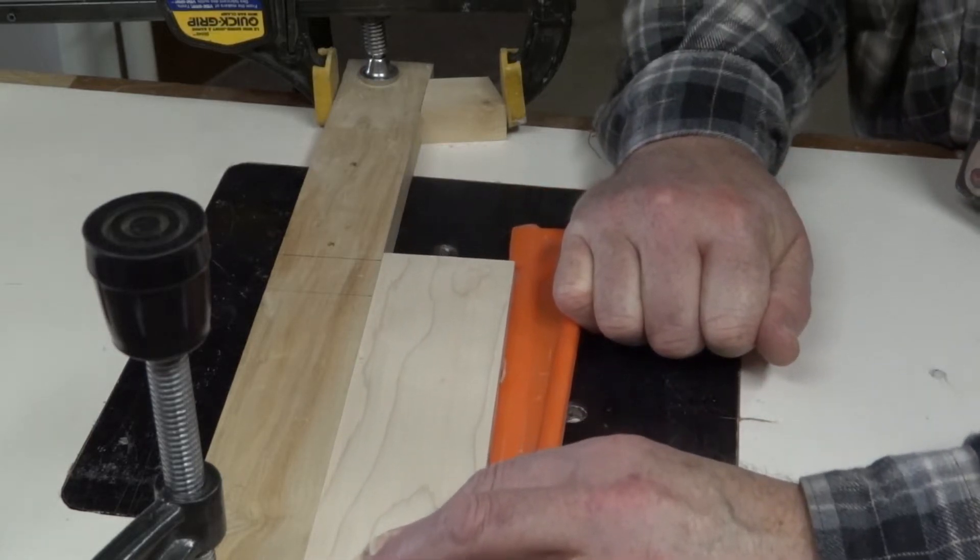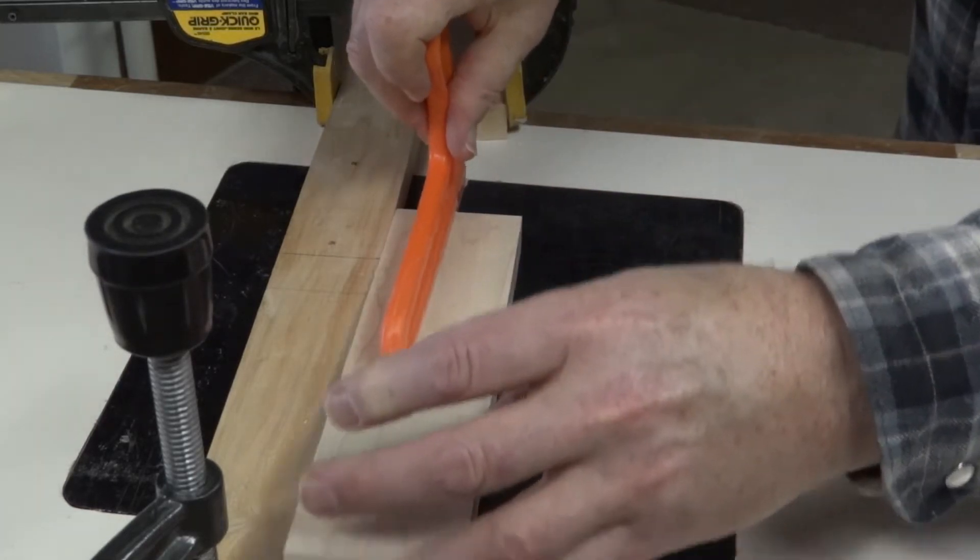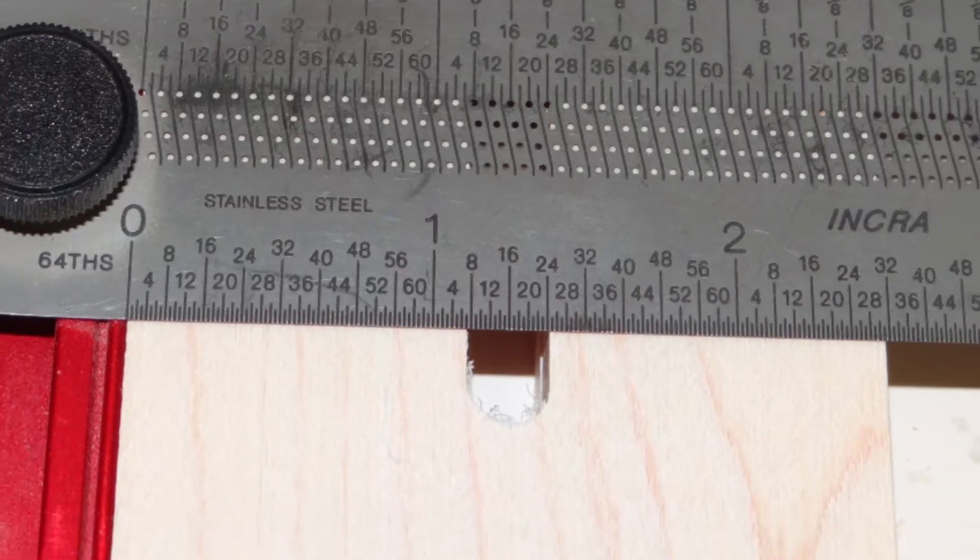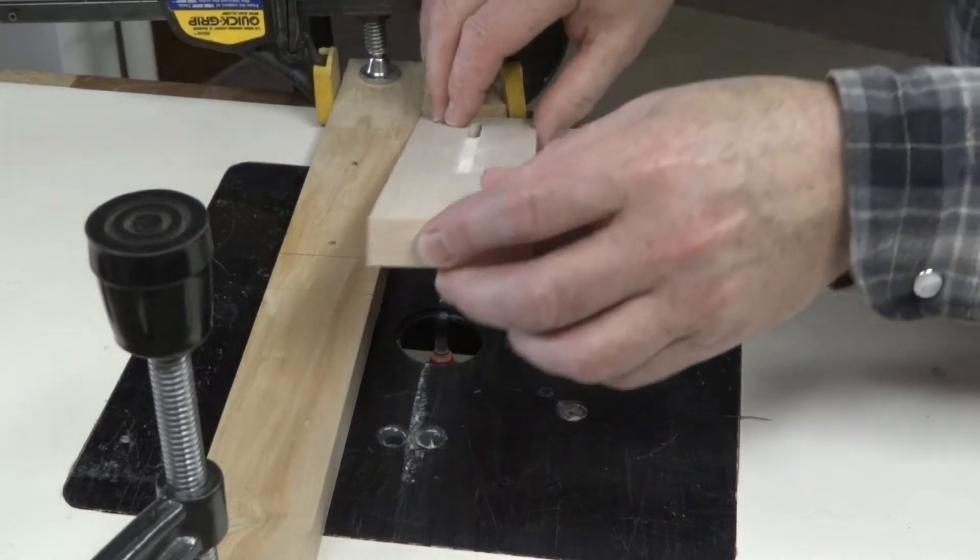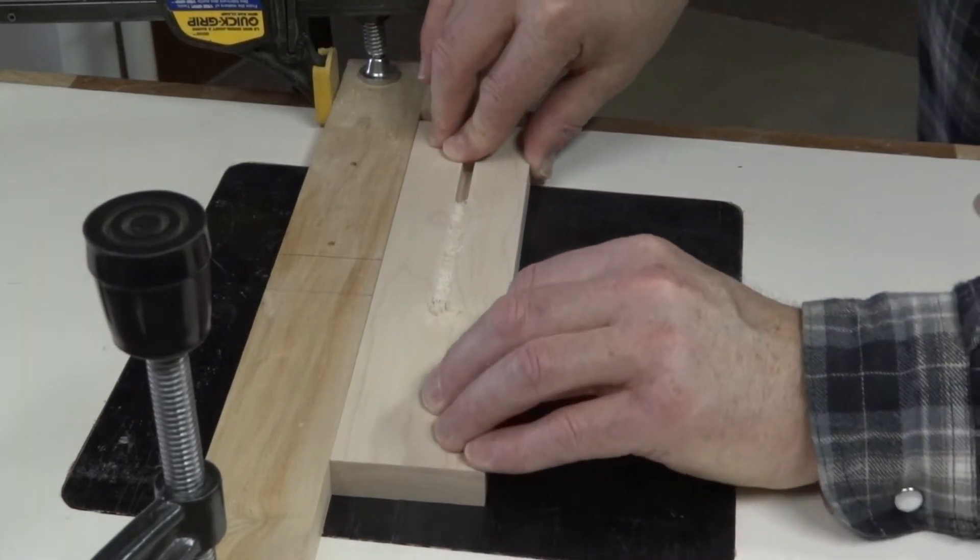I'm routing a groove down the middle of the adjuster. I have the router bit just over one half the height of the board. I have a stop on the far end of the fence and a line drawn to tell me when to stop pushing the board. I flip the board over to run the other side against the fence. This will make the groove slightly larger than the quarter inch bit.